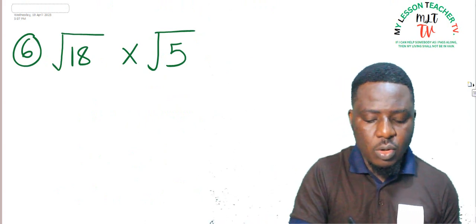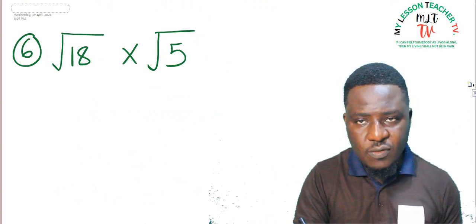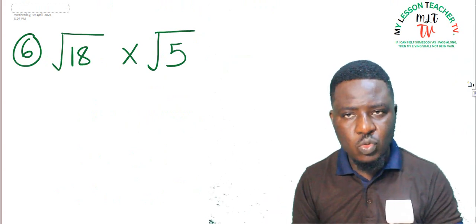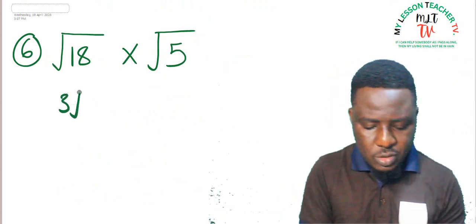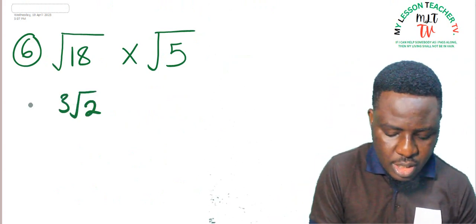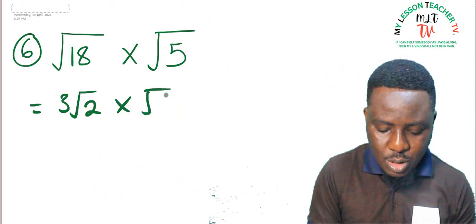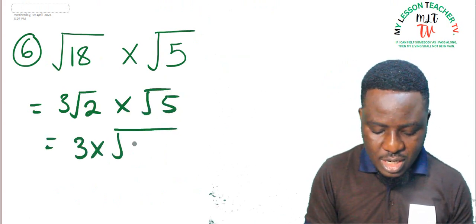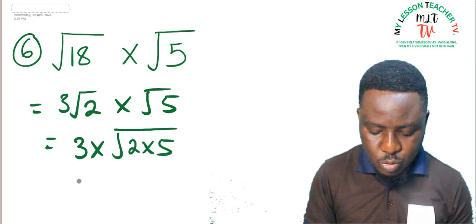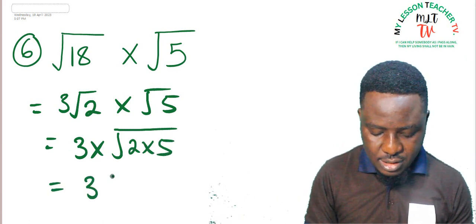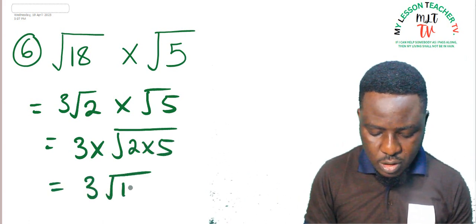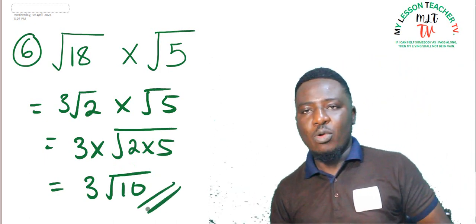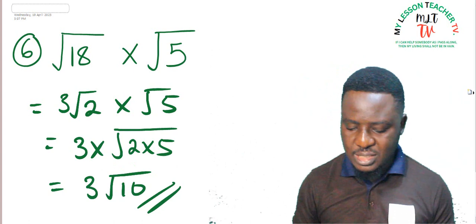Question 6: root 18 times root 5. Root 18 = root 9 times root 2 = 3 root 2. So this becomes 3 root 2 times root 5 = 3 times root 10 = 3 root 10. Since 10 cannot be broken down further, the answer is 3 root 10.